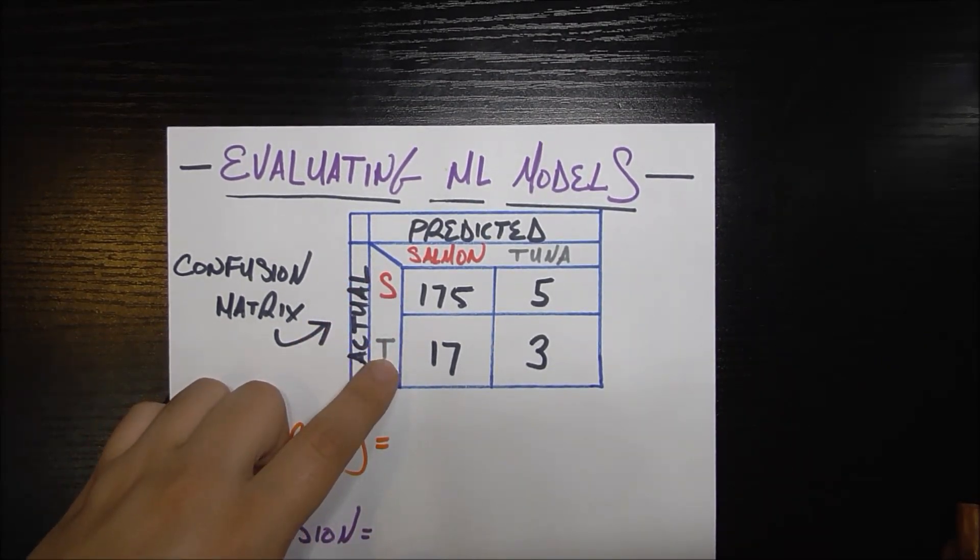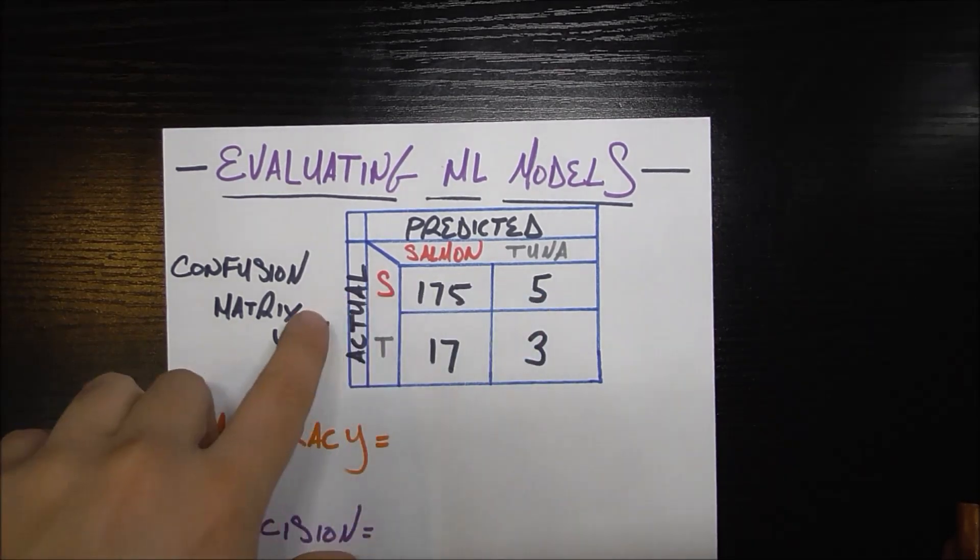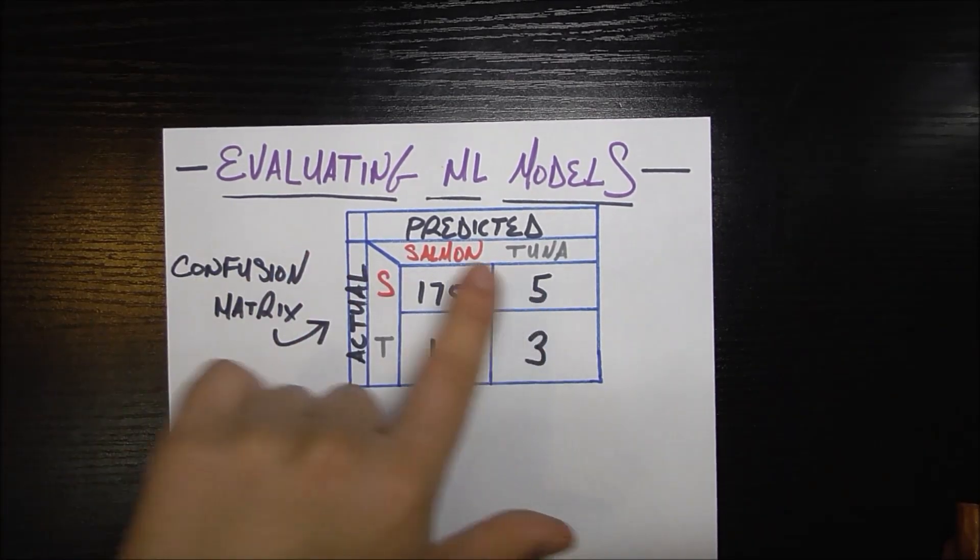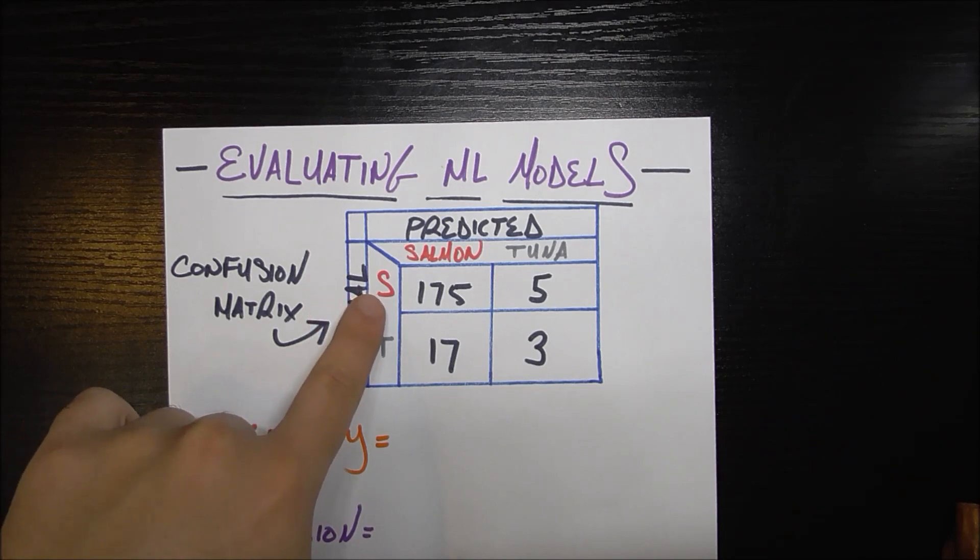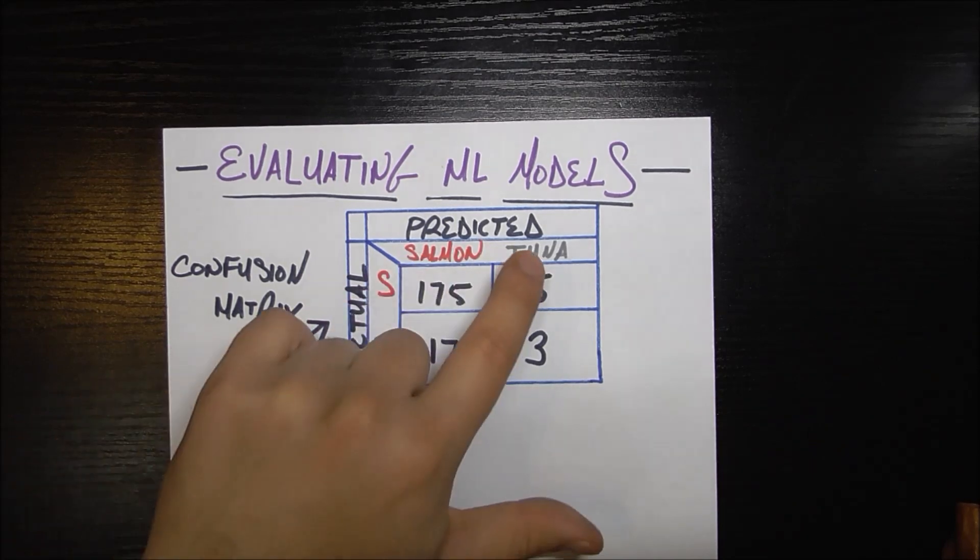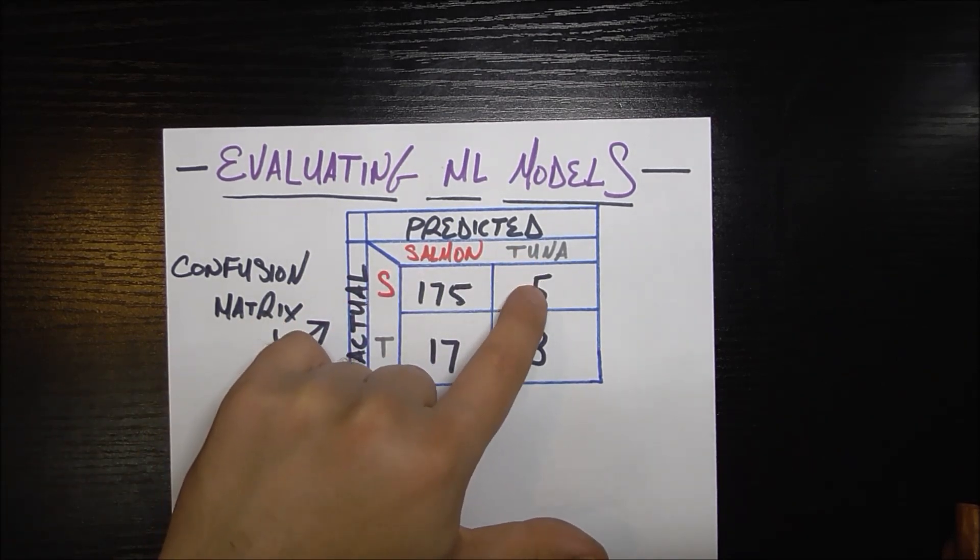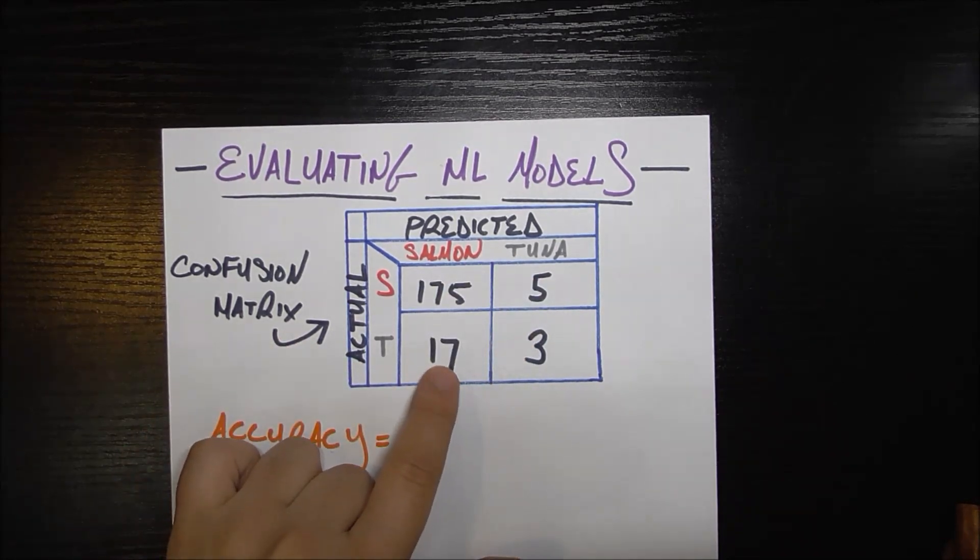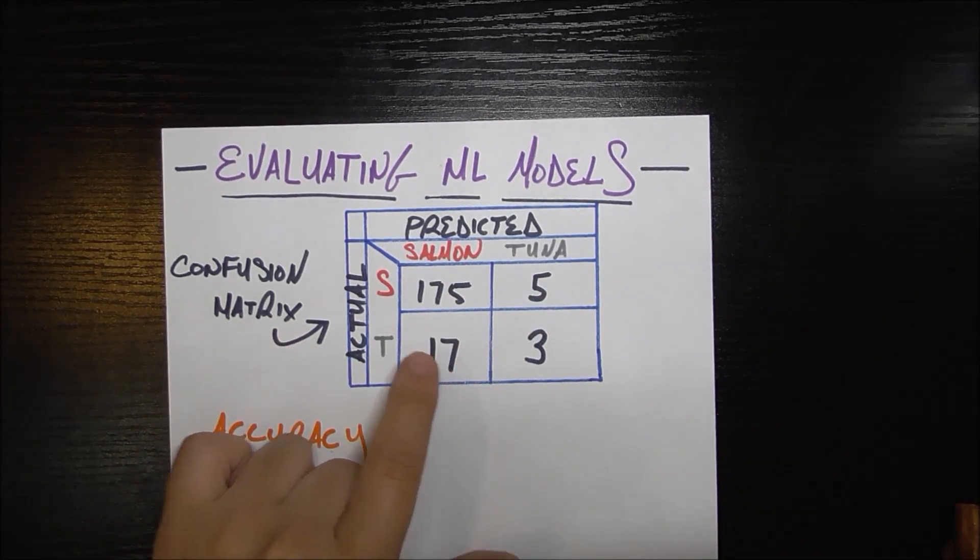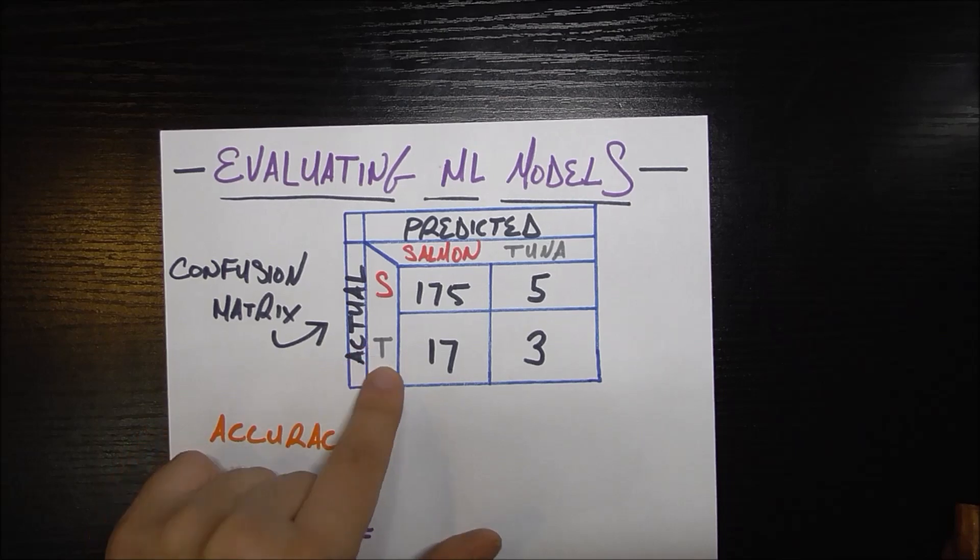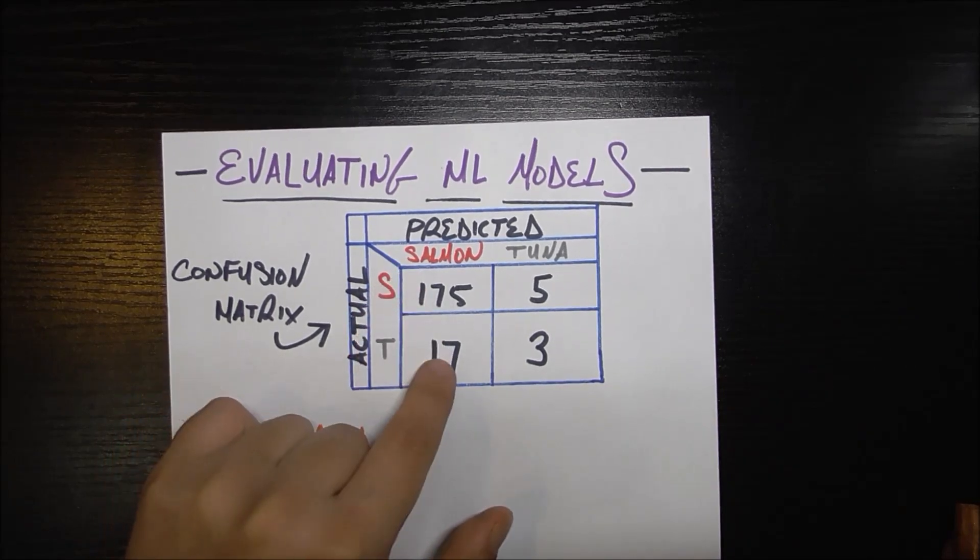S is salmon, T is tuna. For example this five right here says that there was five cases where the mystery fish was actually a salmon but I predicted it to be a tuna. So I was wrong here. This is also a wrong situation, just the other way where the mystery fish was actually a tuna but I predicted it to be a salmon.